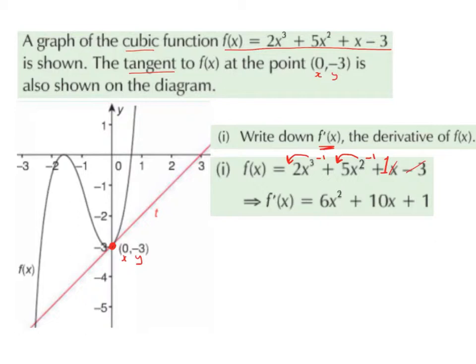Bringing down the power in front, 2 multiplied by 5 gives us 10, and 2 take away 1 gives us 1. So we get 10x to the power of 1, which is just going to be 10x.